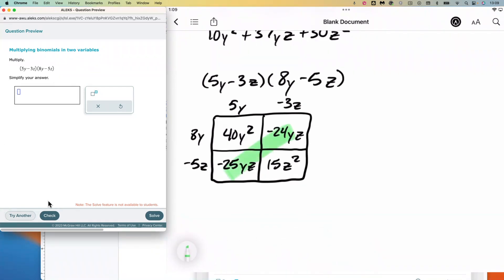And as with last time, you'll notice that those two are like terms and will eventually be added together. So what's inside the boxes is our answer: 40y² minus 24yz minus 25yz plus 15z². So 40y² minus 49yz plus 15z².